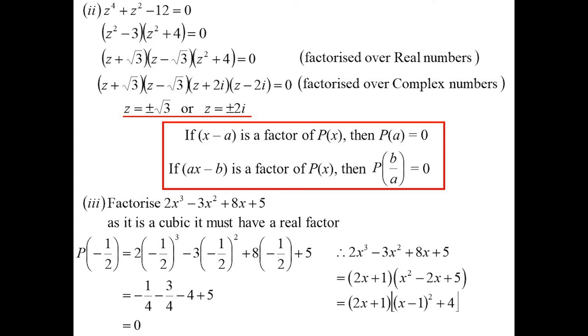That's not going to work, is it? So I'll complete the square on that one. x minus 1 squared plus 4, but the plus 4 I can think of as minus 4i squared. And so we'll get x minus 1 minus 2i, x minus 1 plus 2i.